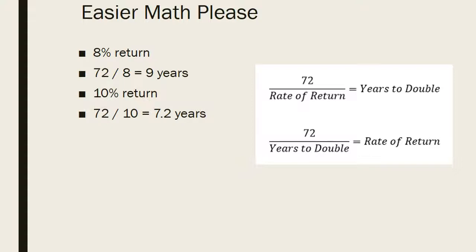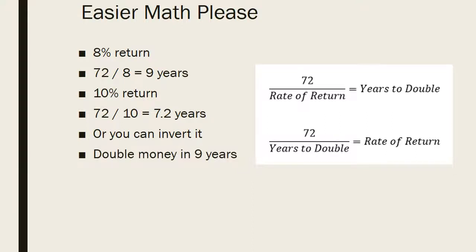We can also rearrange this formula and ask: what is the required rate of return needed to double your money in 9 years? Well, 72 divided by 9 — you're going to need an 8% return.